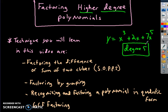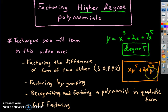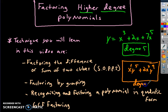Generally, the degree is always the highest exponent on a variable. However, there are other polynomials that exist with multiple variables — for example, XY to the 5th plus 2X squared Y to the 9th. In that case, the degree is the sum of the exponents of the variables being multiplied together. So for XY⁵, that's 1+5=6; for 2X²Y⁹, that's 2+9=11, giving this polynomial degree 11.